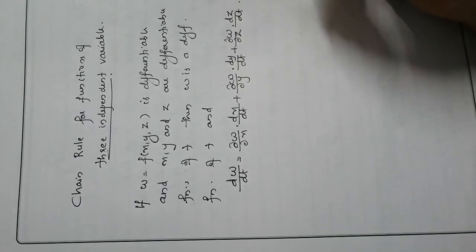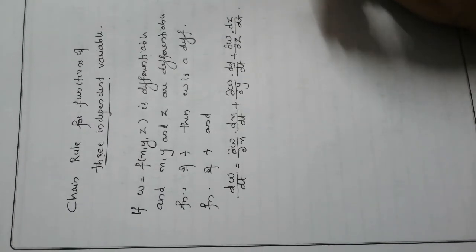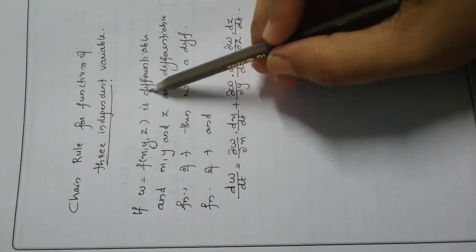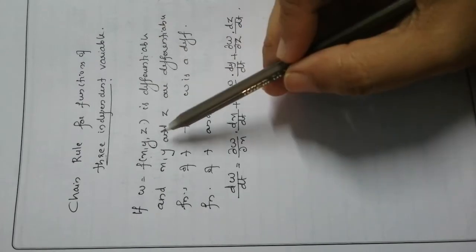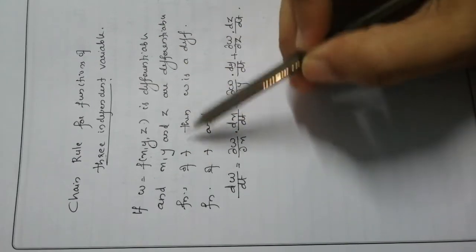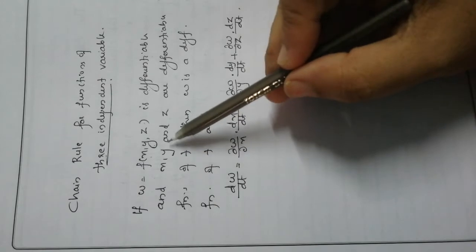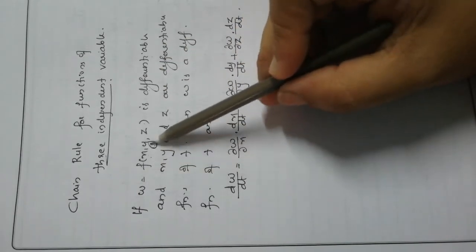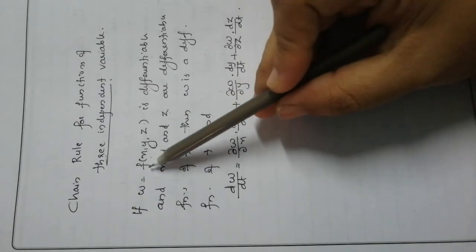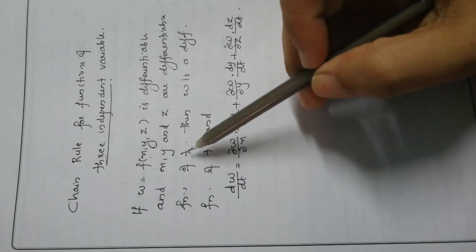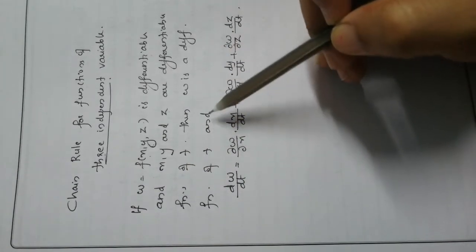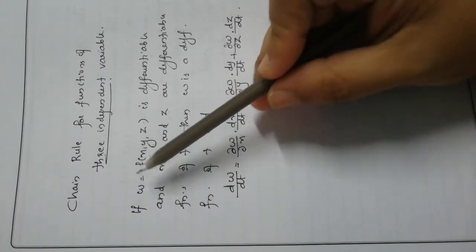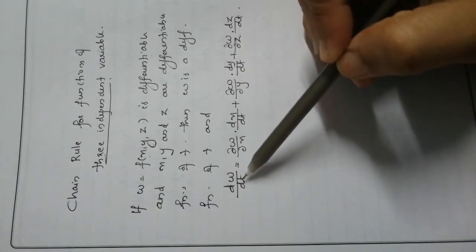This is the statement of the chain rule for functions of three independent variables. If w = f(x, y, z) where x, y, z are differentiable functions of t, then w is a differentiable function of t and we can find dw/dt.